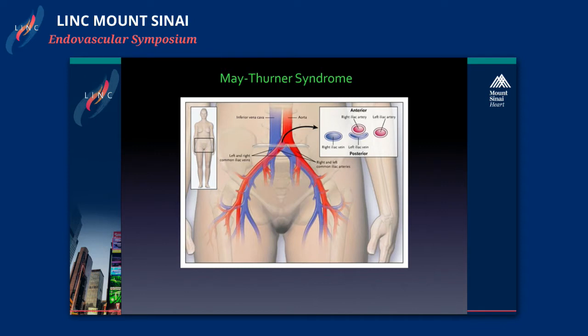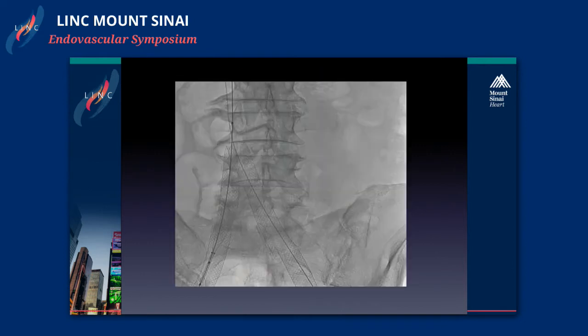We see many other varieties of compression — in the right common iliac vein, in the proximal external iliac vein on both sides. It's also important to keep in mind, as demonstrated in this case, many of these patients have pre-existing DVT. You may see compression elsewhere in the iliac vein in addition to a May-Thurner lesion. This is a picture of a patient where we just deployed a stent on the left side and are finishing up on the right side deploying our last stent.